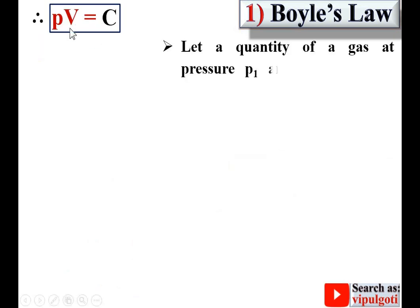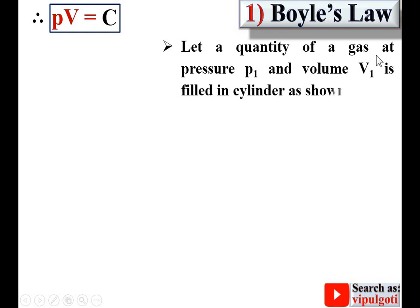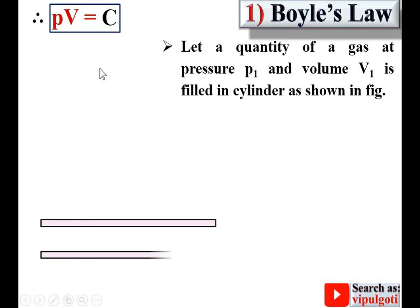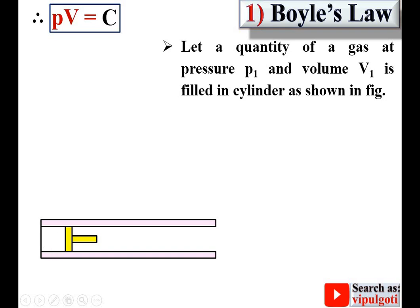Try to understand this statement. Let a quantity of gas at pressure P1 and volume V1 be filled in a cylinder as shown in the figure. This is the cylinder where a piston will reciprocate. The space filled with gas initially has pressure P1 and volume V1 — this space is our system. The condition is temperature is constant.